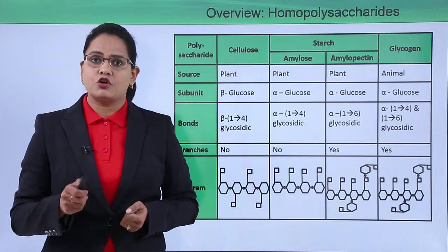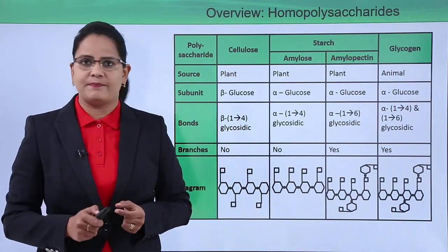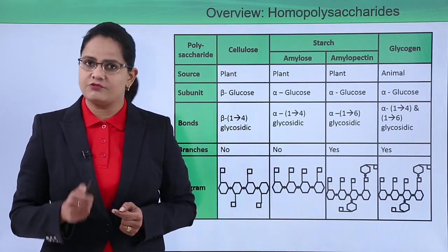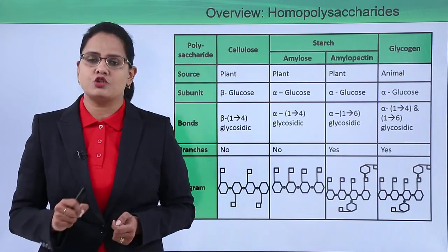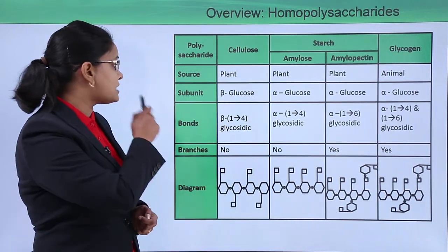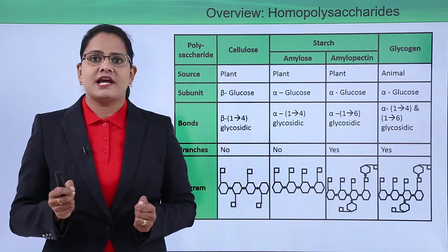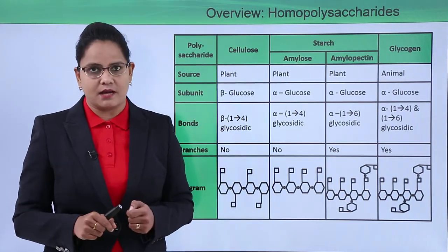The source: cellulose is obtained from plants, starch is also obtained from plants, but glycogen is from animals. It is mainly stored in liver tissue.